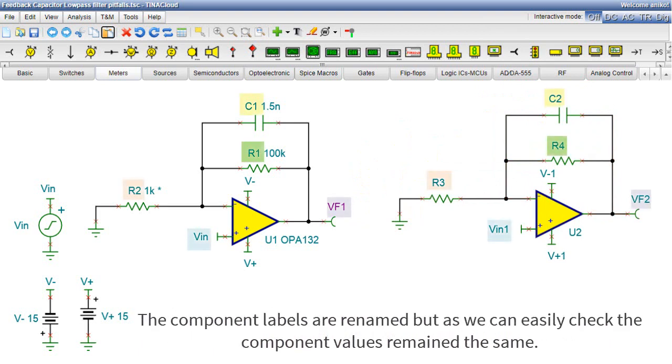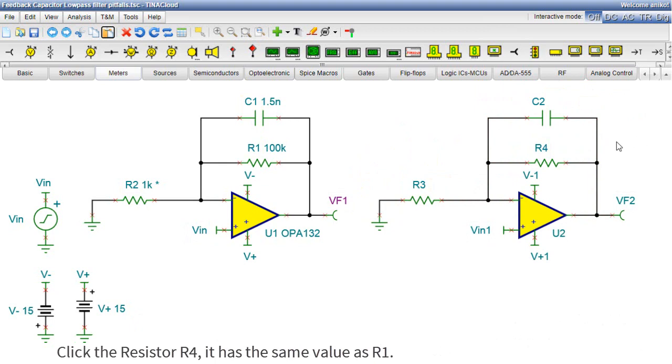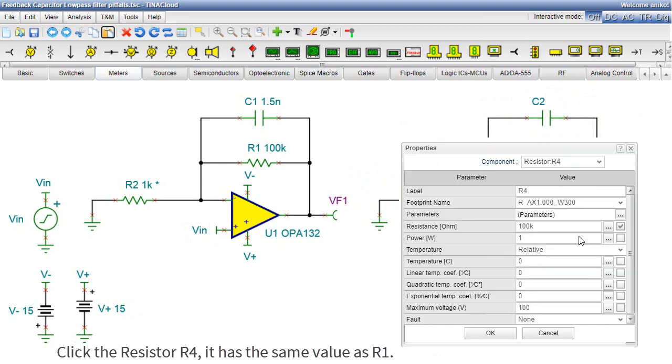The component labels are renamed, but as we can easily check, the component values remained the same. Click the resistor R4. It has the same value as R1. You can rename it to R1.